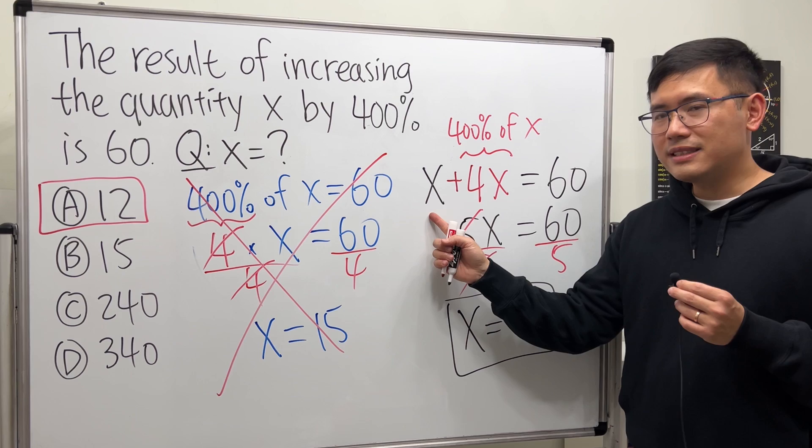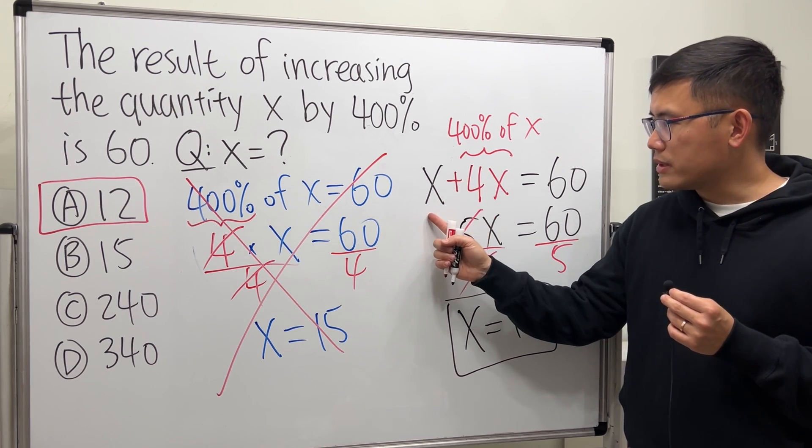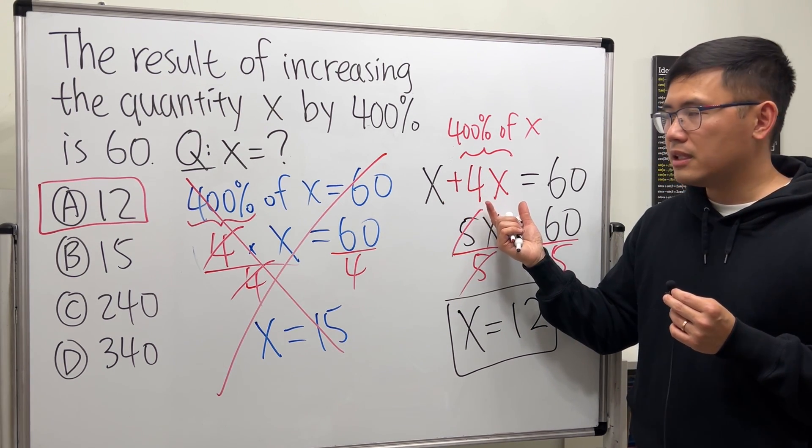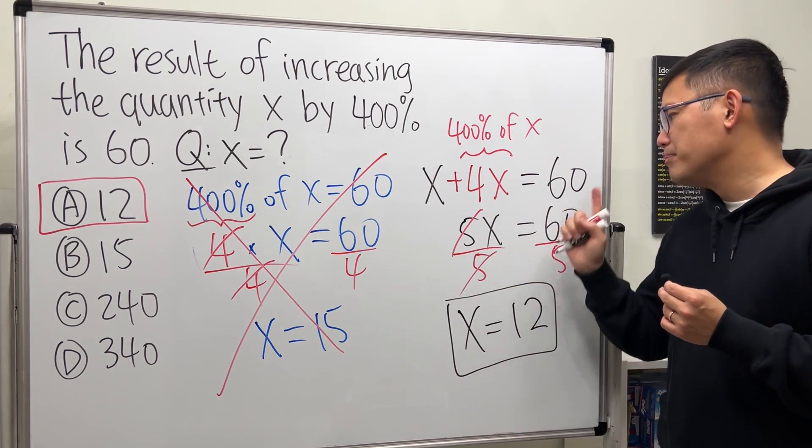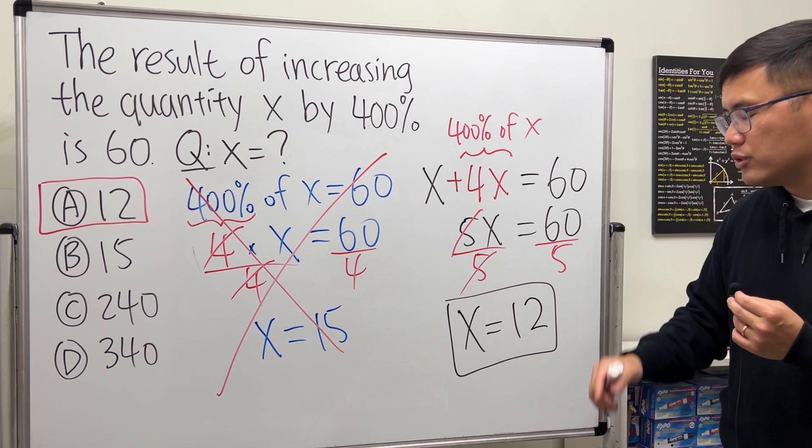Again, start with x, and then you want to increase this quantity by 400 percent, meaning 400 percent of it. Make it equal to 60. The original amount is 12.